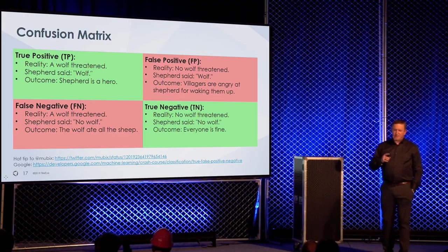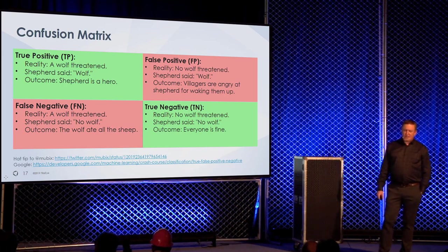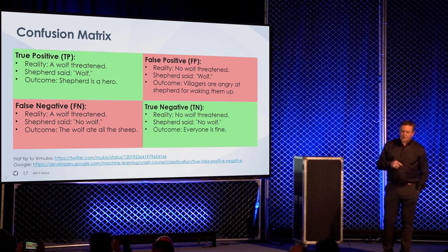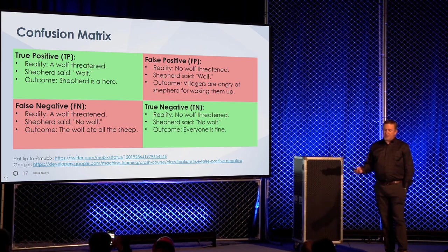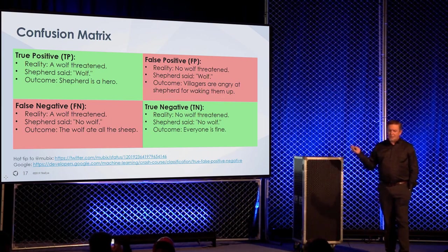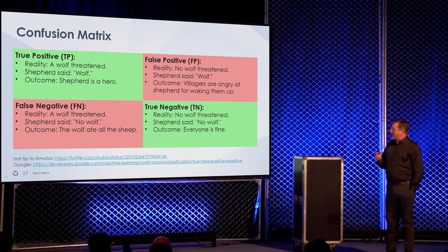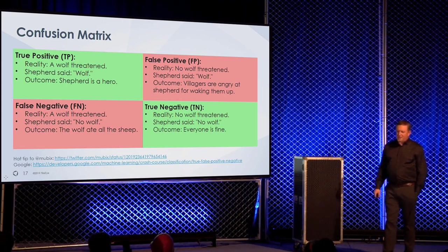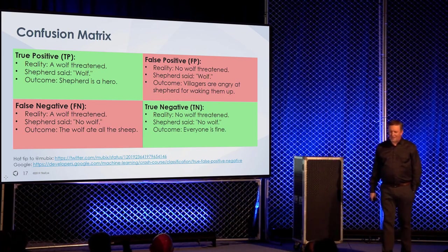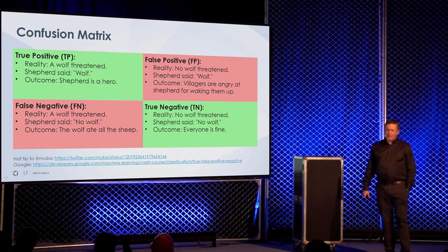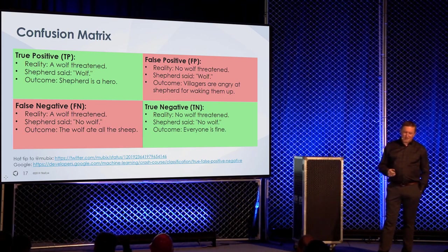True positive, false positive, false negative, true negative: false positive — no wolf threatened, shepherd cried wolf, villagers are angry. False negative — a wolf threatened, shepherd said no wolf, and the wolf ate all the sheep. We have to think about those things as we build our control system security monitoring. Same as with ICS alarms — if there are false negatives and false positives, operators won't trust the system and will go into manual mode or shut part of the process down.